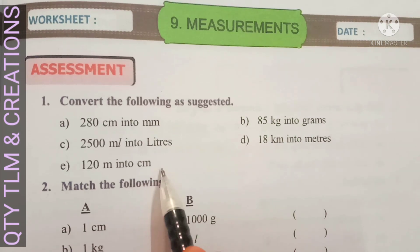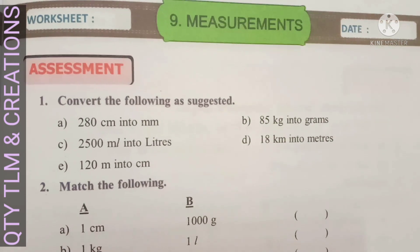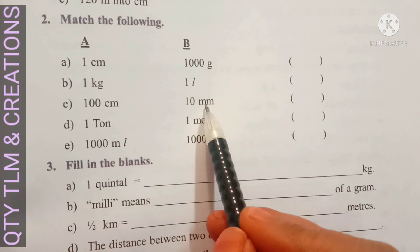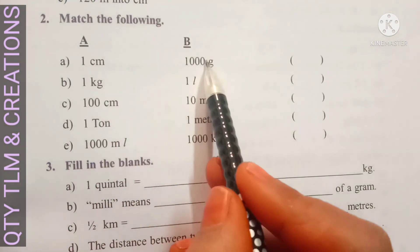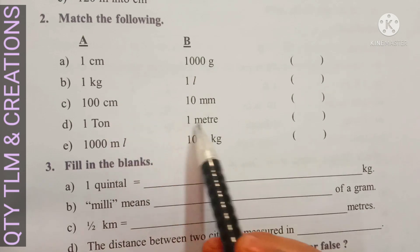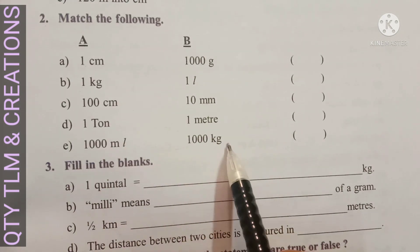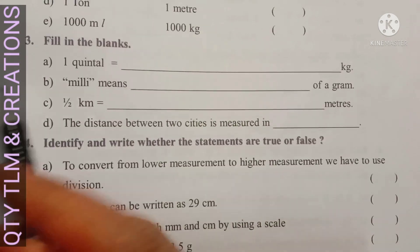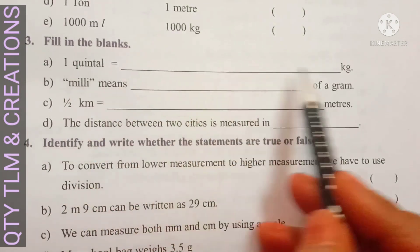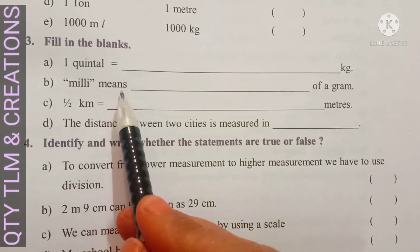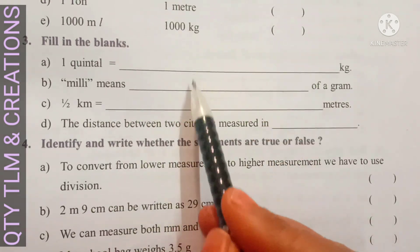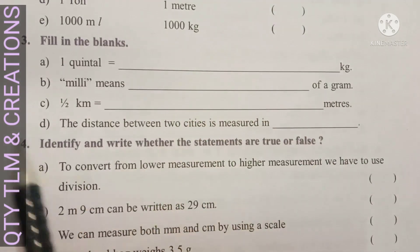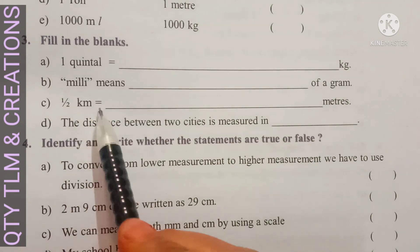Match the following: 1 centimeter equals 10 millimeters; 1 kilogram equals 1000 grams; 100 centimeters equals 1 meter; 1 ton equals 1000 kilograms; 1000 milliliters equals 1 liter. Fill in the blanks: (a) 1 quintal equals 100 kilograms. (b) Milli means one-thousandth of a gram. (c) One-half kilometer equals 500 meters.